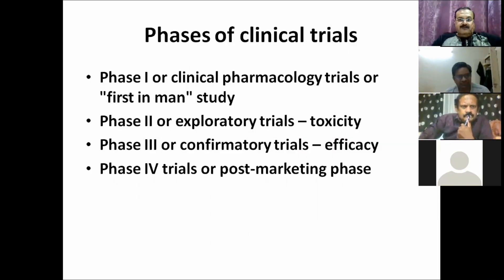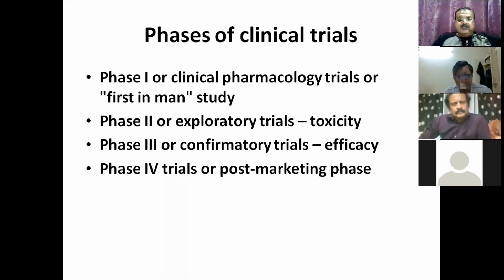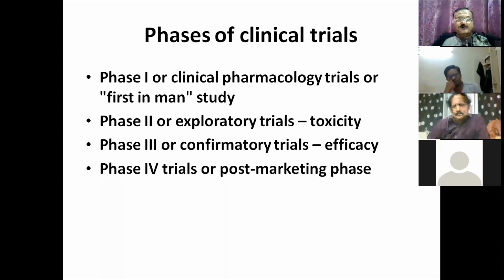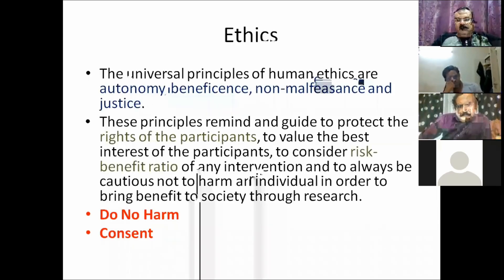There are four phases of clinical trials. Phase I (first-in-man) studies pharmacokinetics and pharmacodynamics, typically in healthy individuals — though cytotoxic drugs like anti-cancer agents are tested in terminally ill patients. Phase II exploratory trials examine toxicity before efficacy. Phase III confirmatory trials establish efficacy. Phase IV post-marketing trials monitor for new toxicities after the drug has been approved.